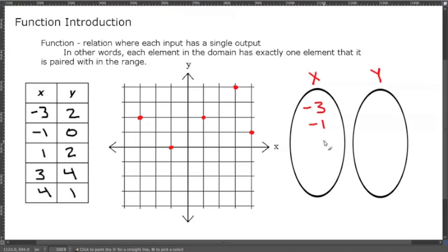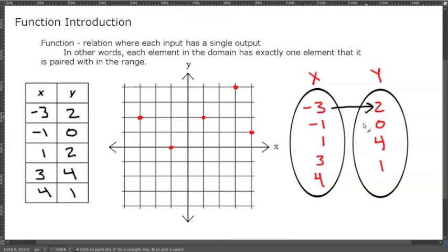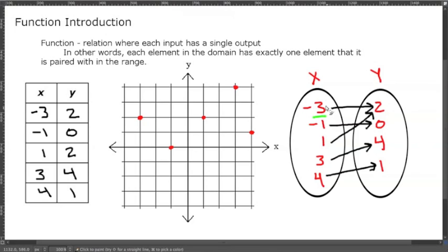When mapping, our x values are: negative three, negative one, one, three, and four. They map to: two, zero, two, four, and one respectively. Negative three maps to two, negative one maps to zero, one also maps to two, three maps to four, and four maps to one. This relation is a function because each x value has only one y value. Even though negative three and one both map to two, each x only has one y value attached to it.